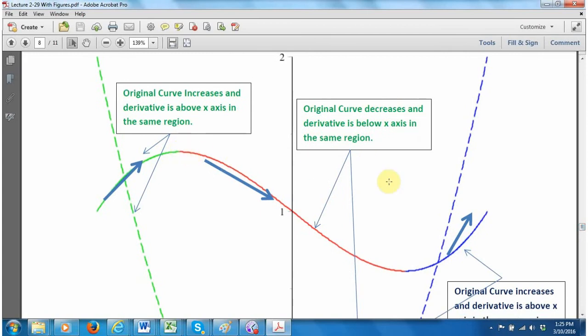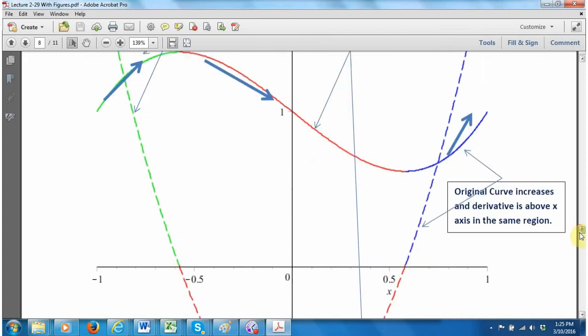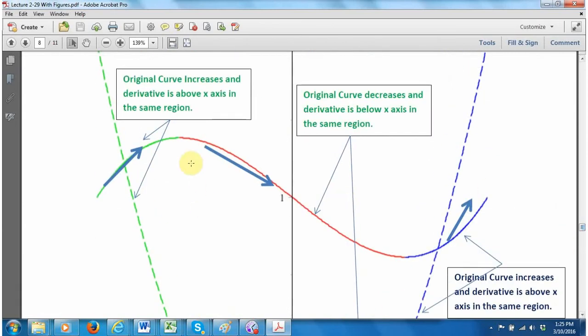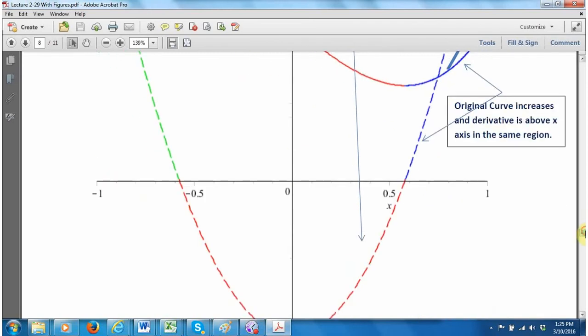In fact, right where it's flat, the derivative, the dashed curve, is striking the x-axis. And then the roller coaster goes down in this red portion, right here. And the red portion, which is the derivative, is entirely below the x-axis right in that red region where the original curve is decreasing. In fact, where it's flat is exactly where it crosses the x-axis.